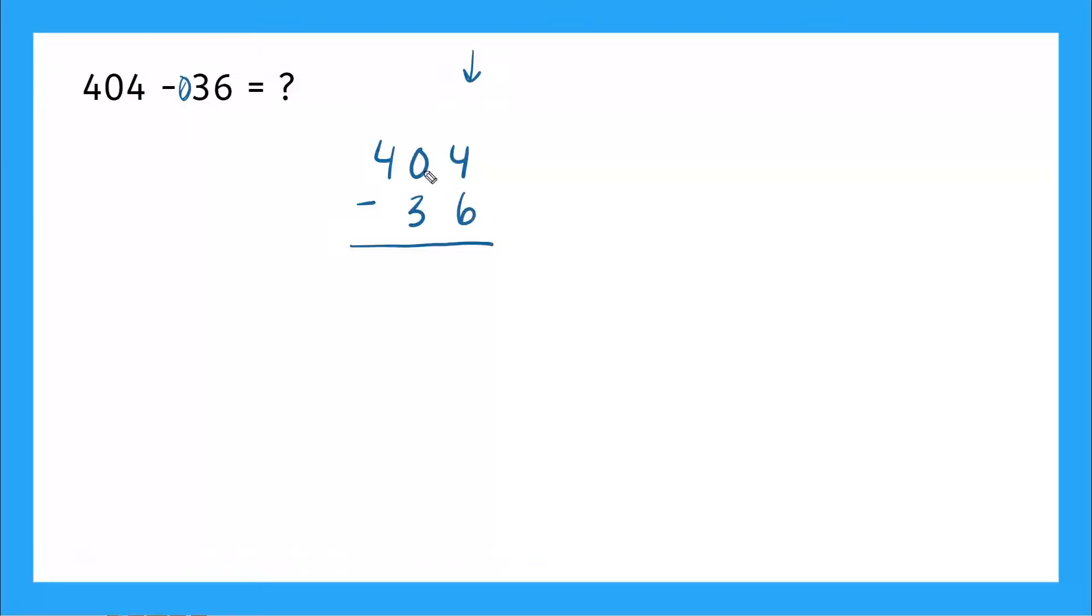We already need to borrow because four is smaller than six. So I'm going to go next door to my tens place and oh my gosh, what do we have? A zero. So we can't borrow from the zero. So we need to go over to the next neighbor in our hundreds place, the four. We're going to borrow from this four.